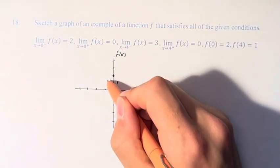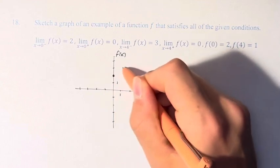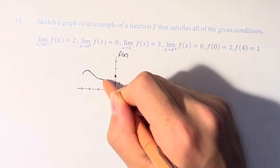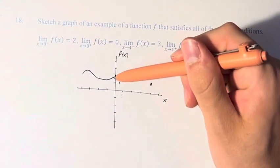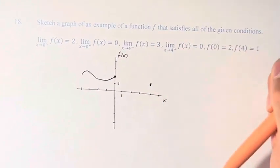So as we're coming towards 0, the function can do whatever we want. But then as we get to 0, it's approaching a value of 2. This happens to be the value of the function at 2, but it doesn't have to be.